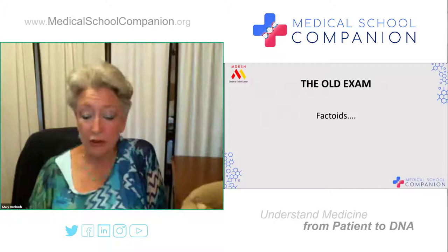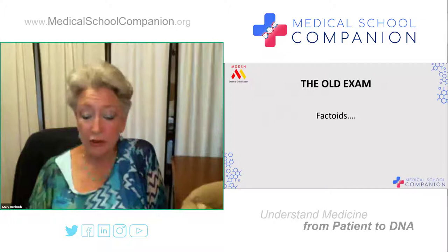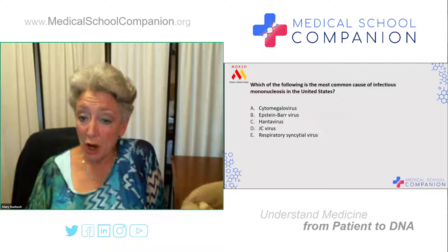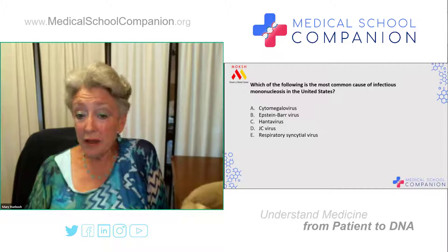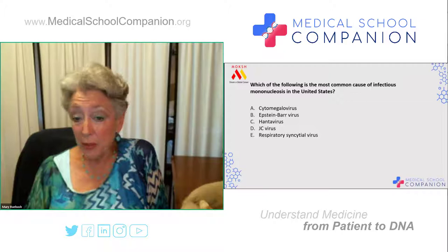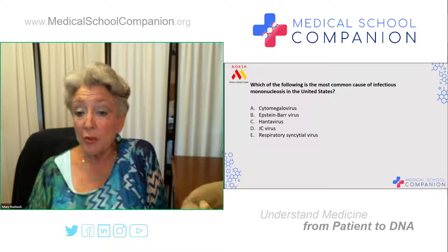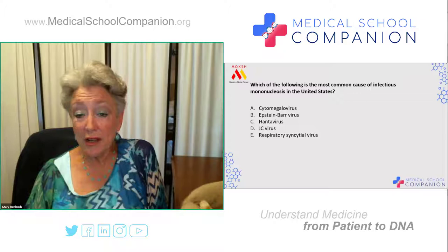Here comes a question I would call a factoid question. If you notice, it has a one-line lead-in: 'Which of the following is the most common cause of infectious mononucleosis in the United States?' followed by a list of agents of disease A through E. The purpose of this discussion is not to test whether you could pick the correct answer — which of course would be Epstein-Barr virus — but every single question in this pile I'm going to show you is about Epstein-Barr virus.